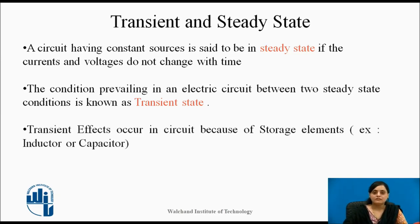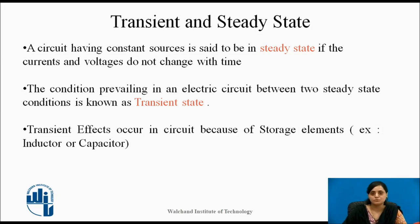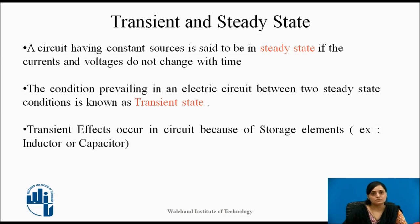Transient effects occur in circuits because of storage elements, which are L and C. We should also know that the transient effects are more severe in cases where DC sources have been used, as compared to AC sources.